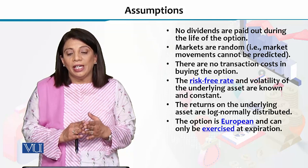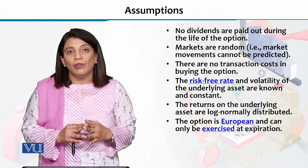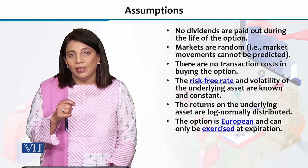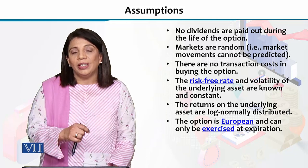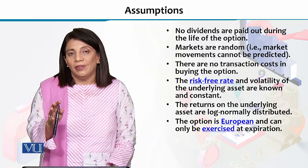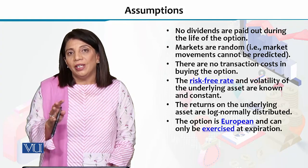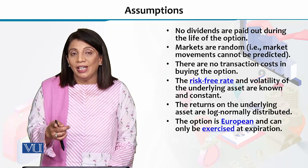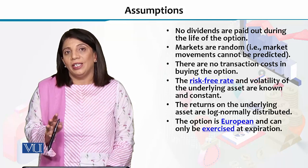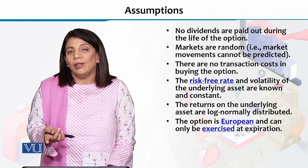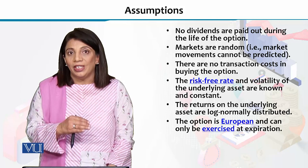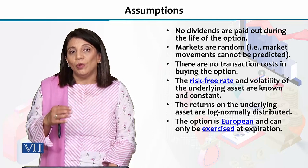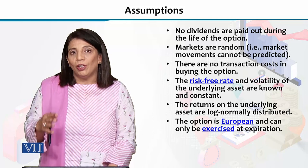The first assumption is that no dividends are paid out during the life of the option. The companies whose stocks or shares the options are defined on are assumed to not give dividends. If dividends are given, then BSM cannot be used. Similarly, if it is an American-style option, you cannot use this model to determine its price. You need to see whether a certain option fulfills the assumptions of the BSM model; only then will you be able to determine the price of that option using this model.